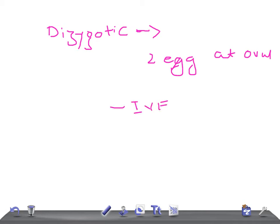Monozygotic twins arise from a single fertilized ovum that splits into two identical structures.